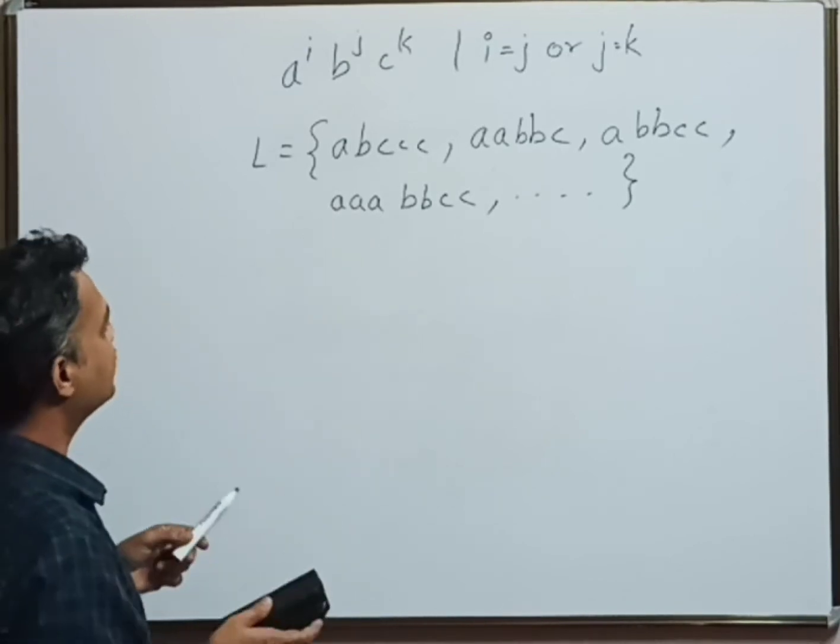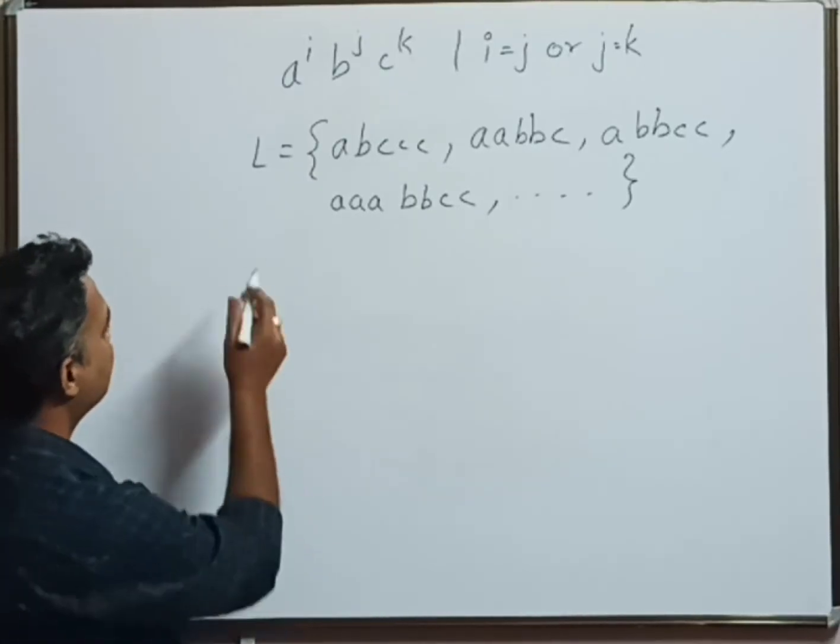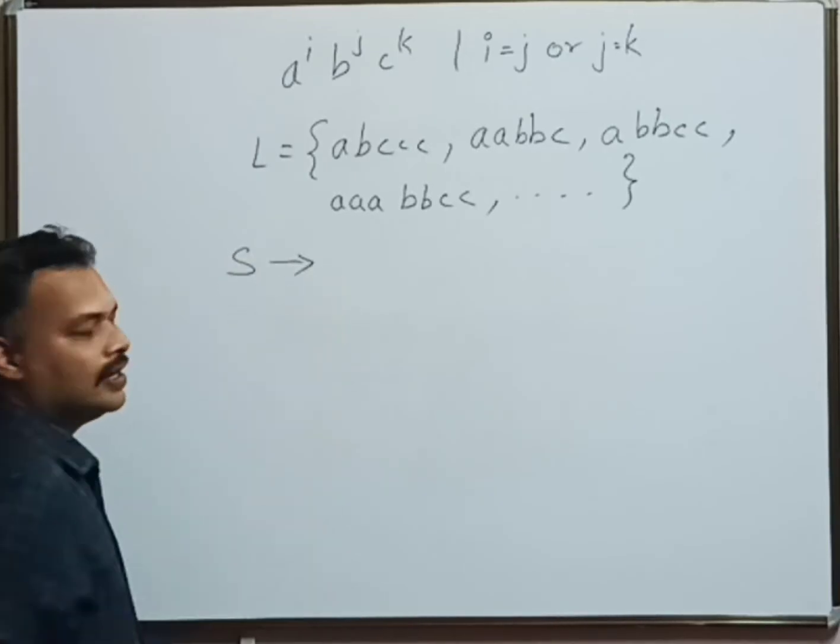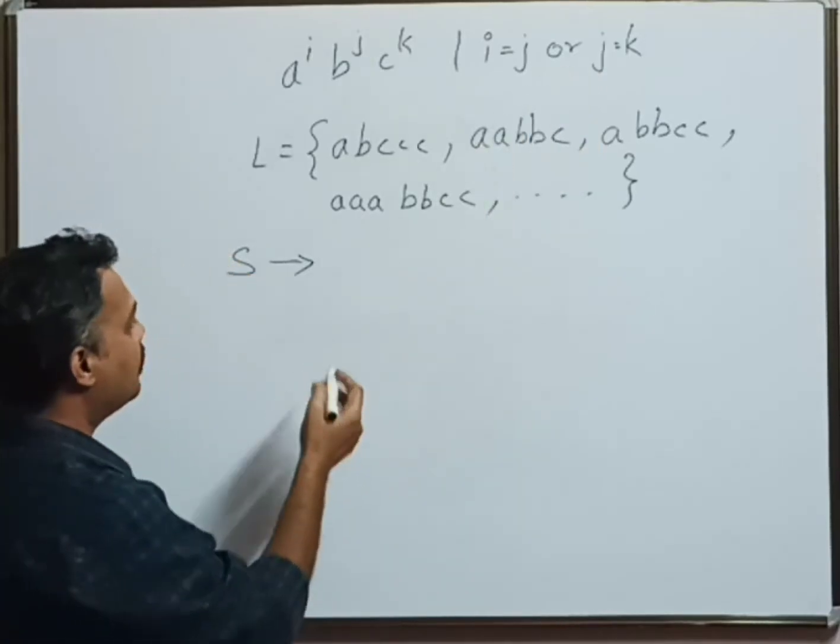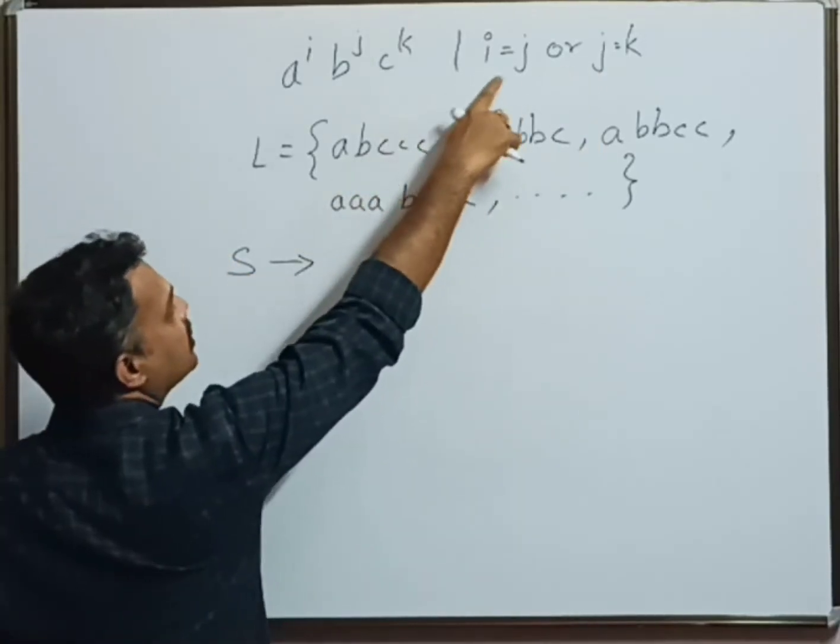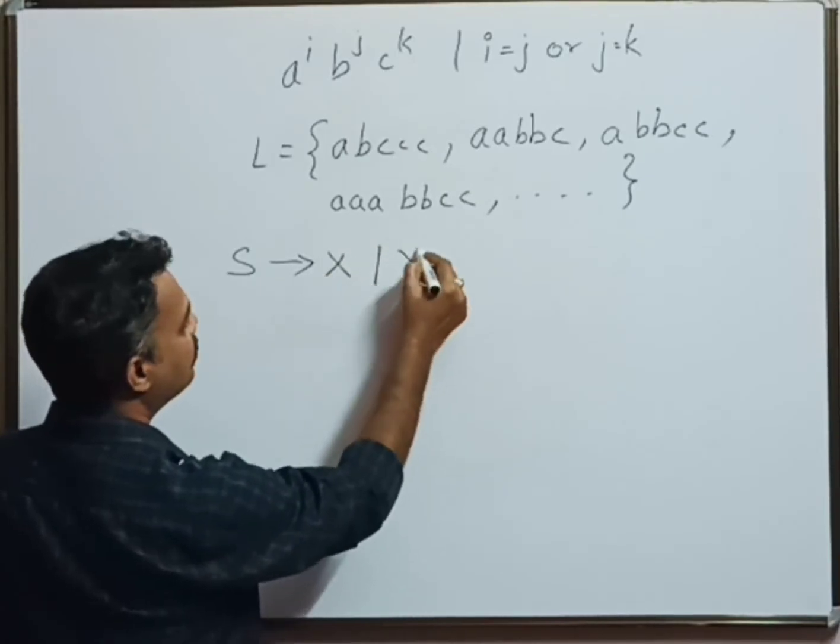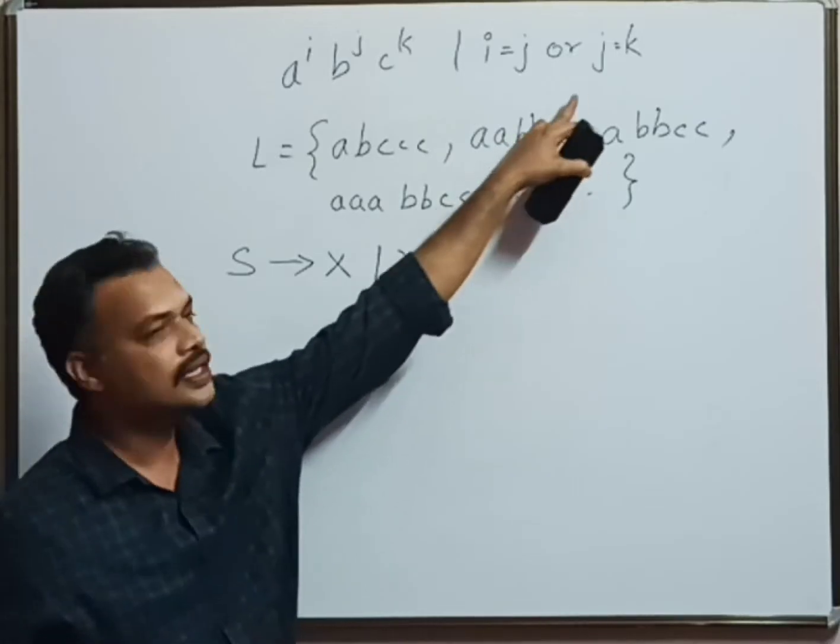Now, let us design the context-free grammar. As usual, we start with the start state S. Since we have options, this or that, we can have two variables, one for this and one for this. So S goes to X or Y. X deals with the first condition, Y deals with the second condition.